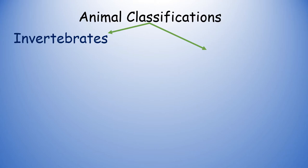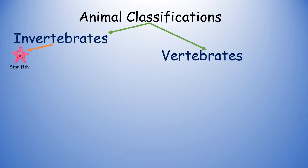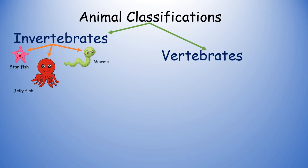There are two different types of animals: invertebrates and vertebrates. Invertebrates are kinds of animals which do not have a backbone. Examples of invertebrates are starfish, jellyfish and worms.